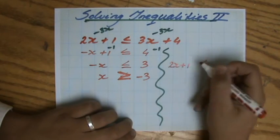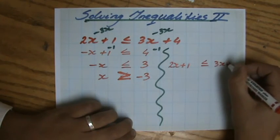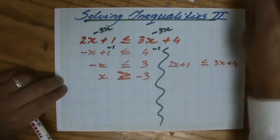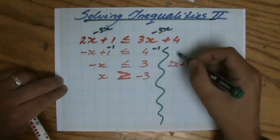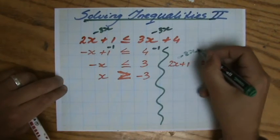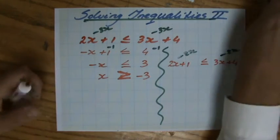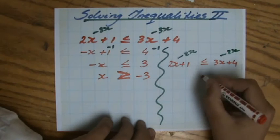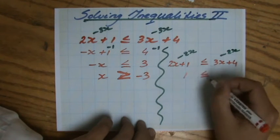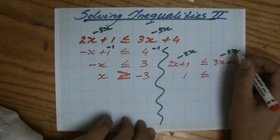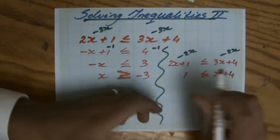2x plus 1 smaller than or equal to 3x plus 4. I can see that if I take away the 3x there, I'm going to get a negative x term. So with inequalities especially, always keep them positive. So I'm going to take away the 2x there.